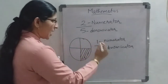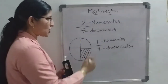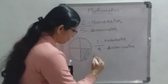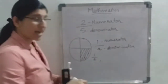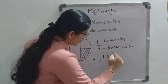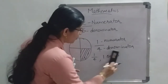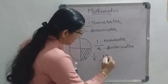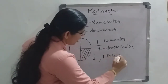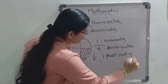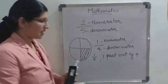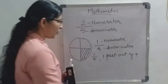The same fraction can be written in different ways. We can write 1 by 4, or we can say '1 part out of 4.' These are different methods of writing the same fraction.